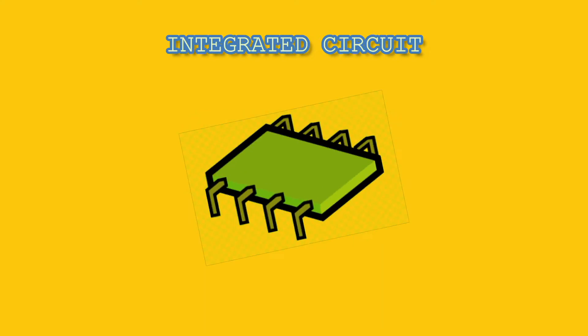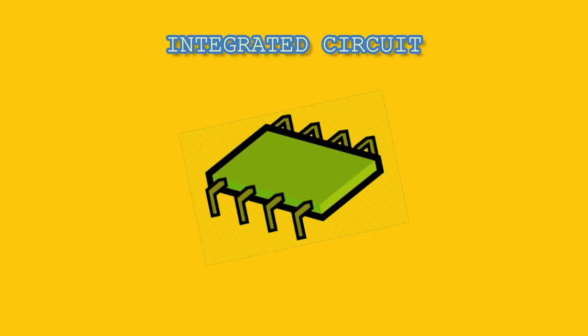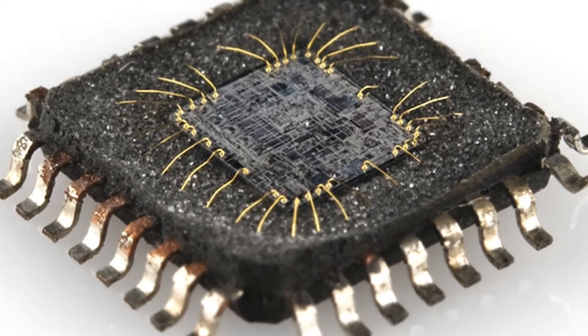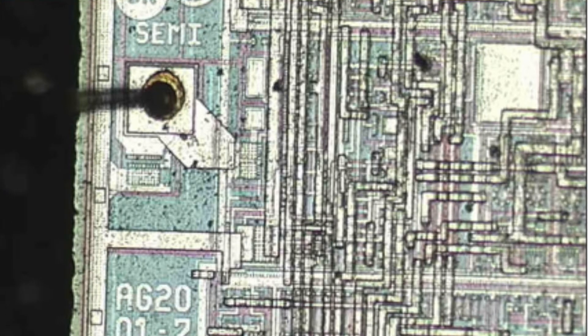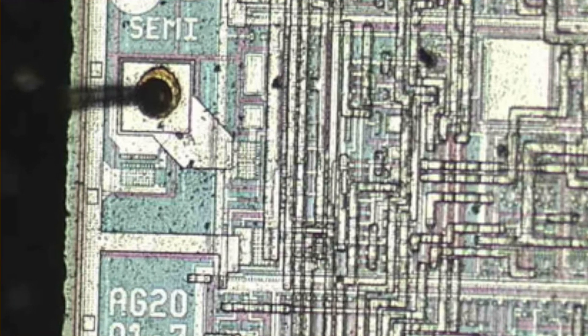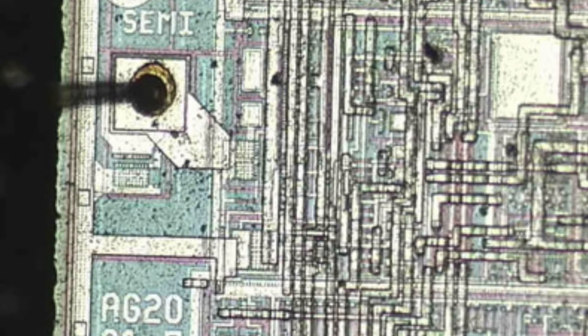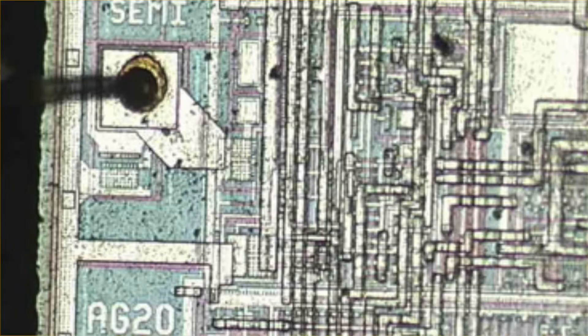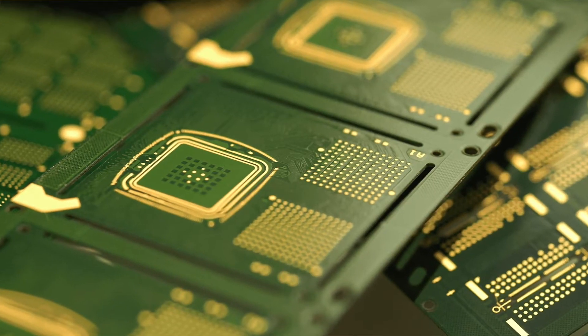An integrated circuit or IC or microelectronic circuit or microchip is an assembly of electronic components fabricated as a single unit, in which miniaturized active devices such as transistors and diodes, and passive devices such as capacitors and resistors, and their interconnections are built up on a thin substrate of semiconductor material, typically made of silicon.